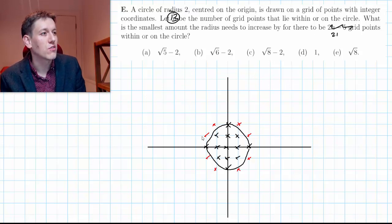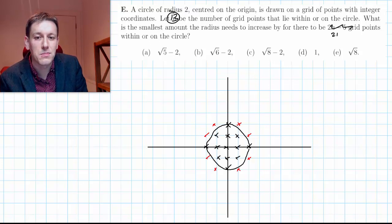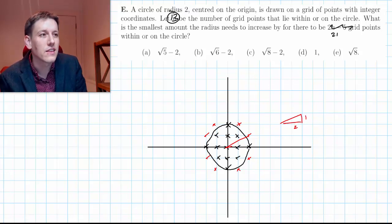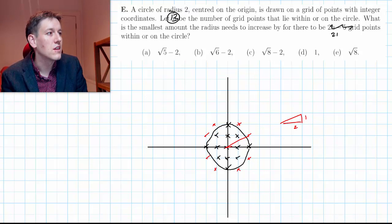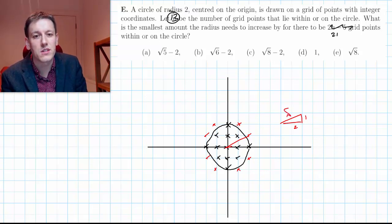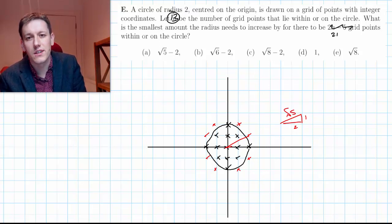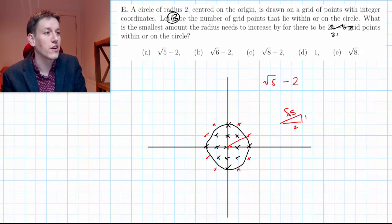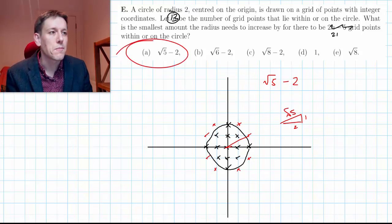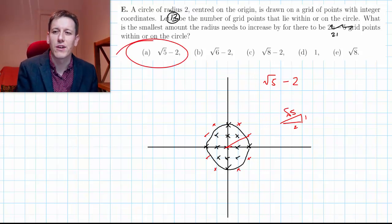So when will there be 21 grid points? It'll be when the radius is exactly the distance to one of these new points — two across and one up. By Pythagoras, that radius will be the square root of 2 squared plus 1 squared, which is the square root of 5. The current radius is 2, so it needs to increase by root 5 minus 2, and then it'll be root 5. That's the answer.